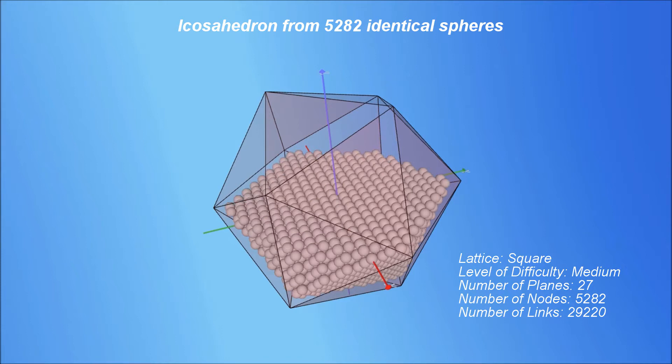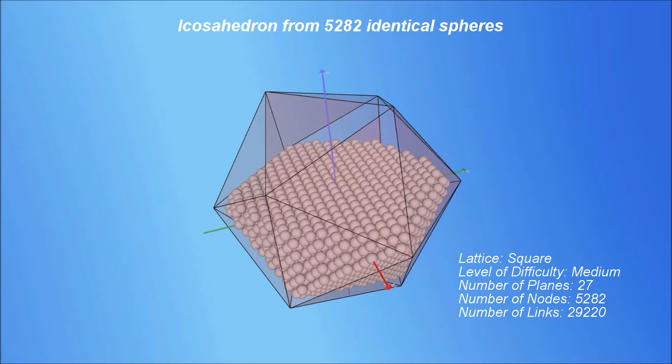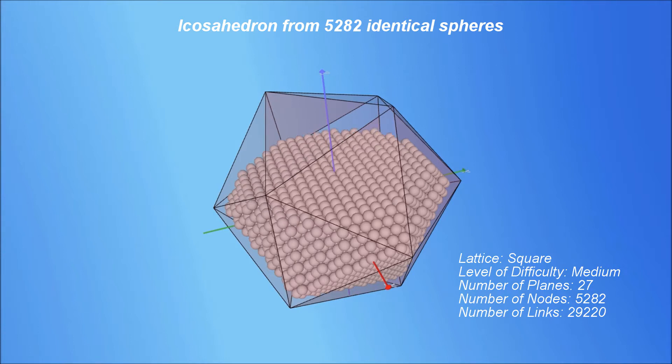When more and more spheres are used, arranged in the same pattern, a more perfect icosahedron starts to emerge.